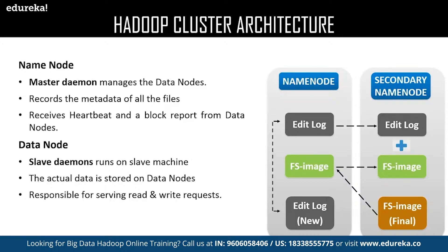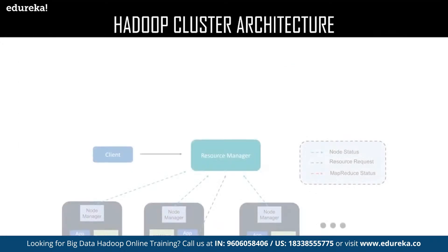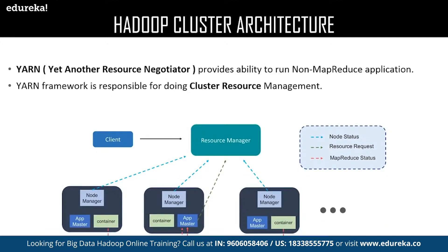Now let us discuss YARN — Yet Another Resource Negotiator. YARN consists of the following elements: NodeManager, AppMaster, and Container. NodeManager is a Java utility that runs as a separate process from the web logic server; it allows you to perform common operations for a managed server regardless of its location with respect to the administration server. AppMaster is responsible for negotiating resources between the ResourceManager and NodeManager. The Container is a collection of reserved resources allocated from the ResourceManager to work on the task assigned by the NodeManager.